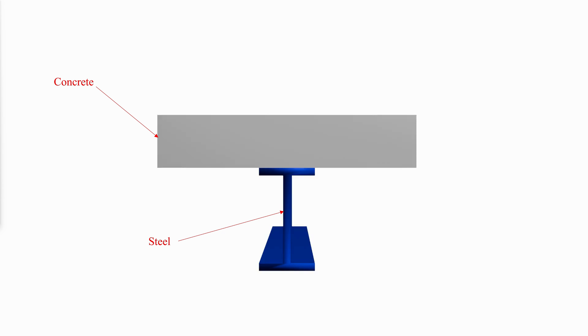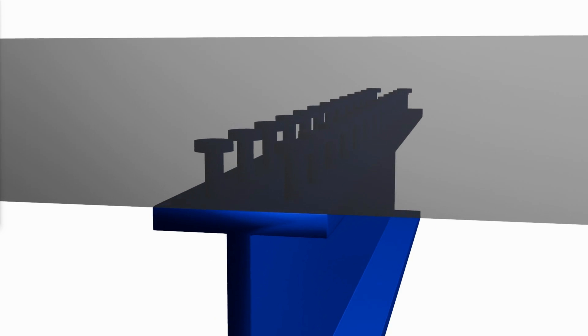This unified behavior is possible only if horizontal slippage between the two components is prevented. That can be accomplished if the horizontal shear at the interface is resisted by connecting devices known as anchors, sometimes called shear connectors.